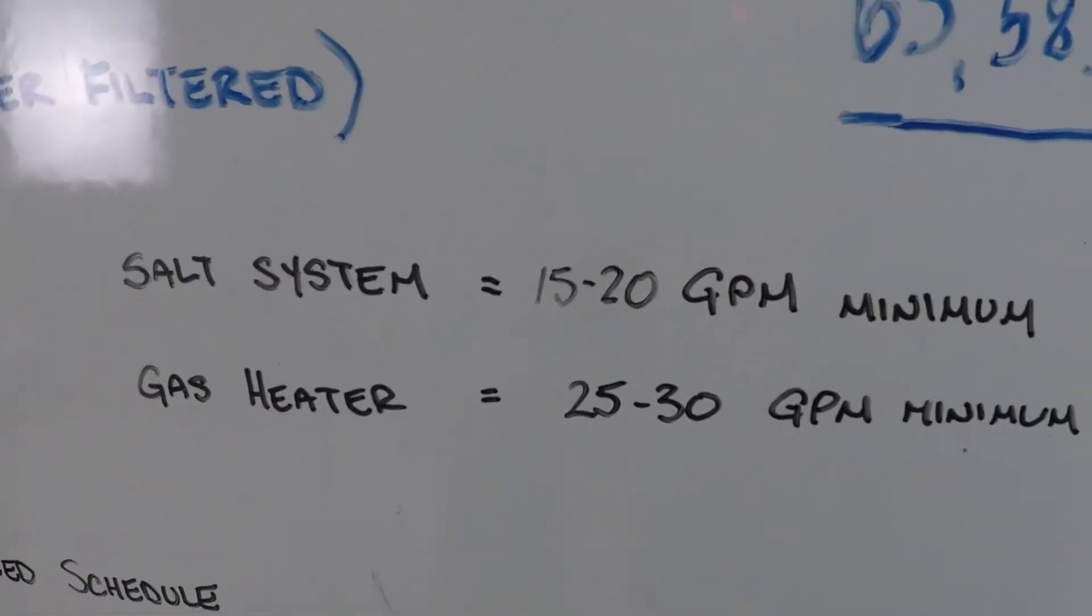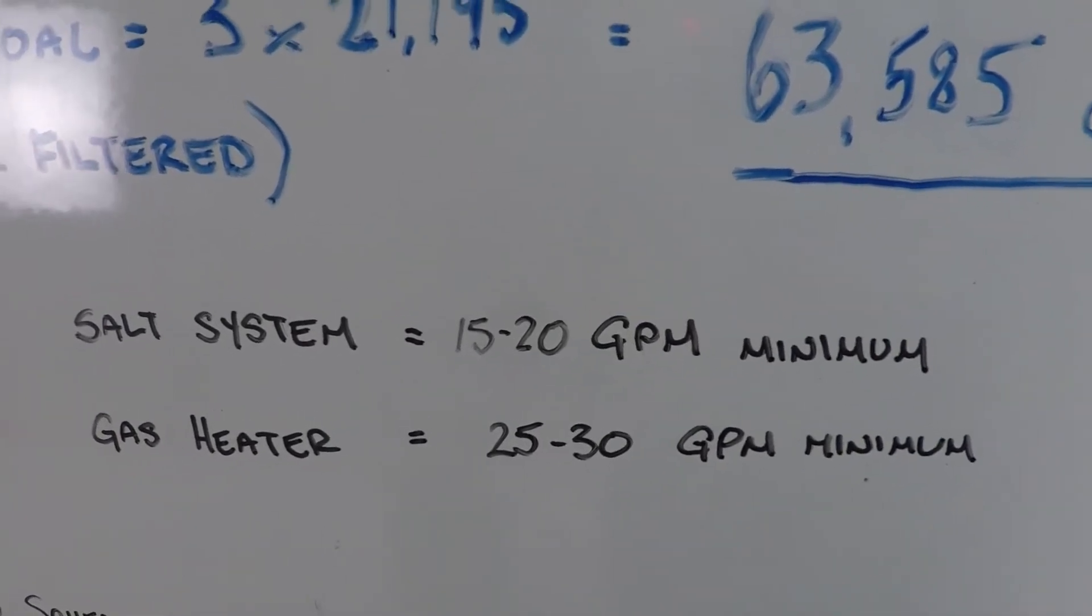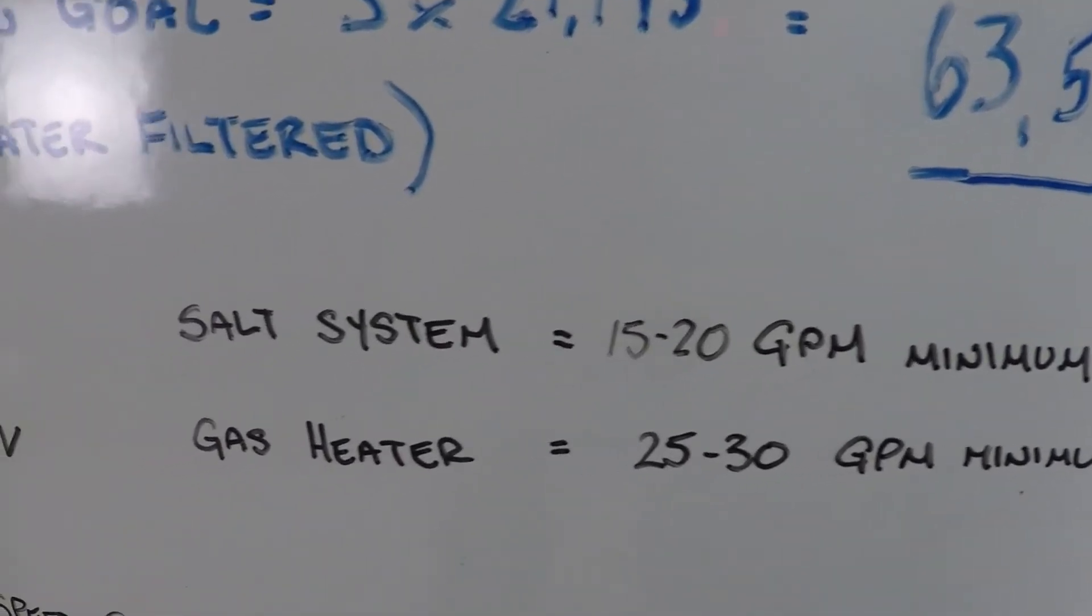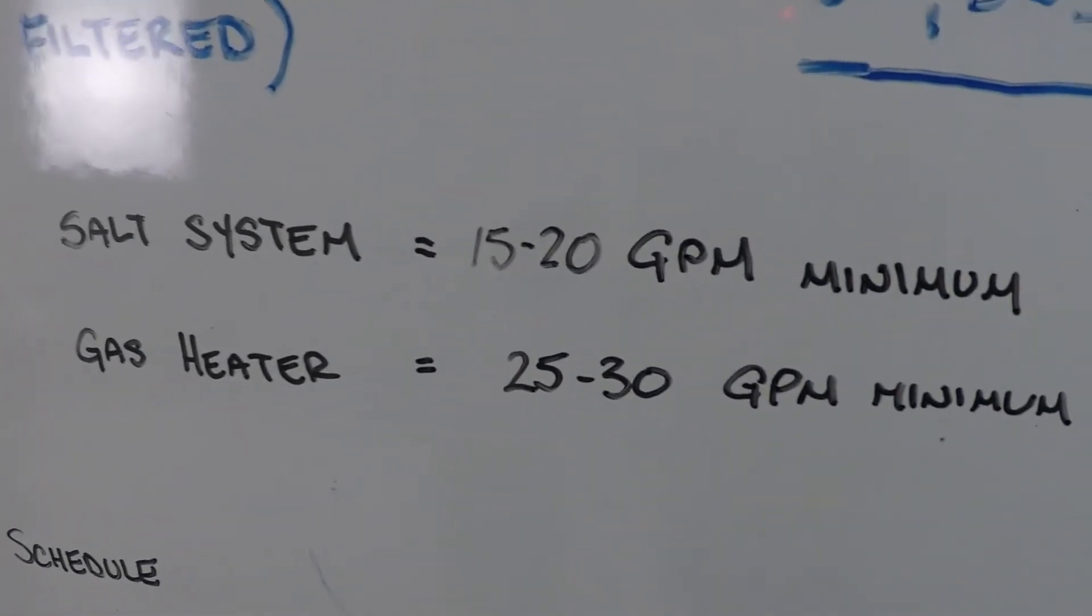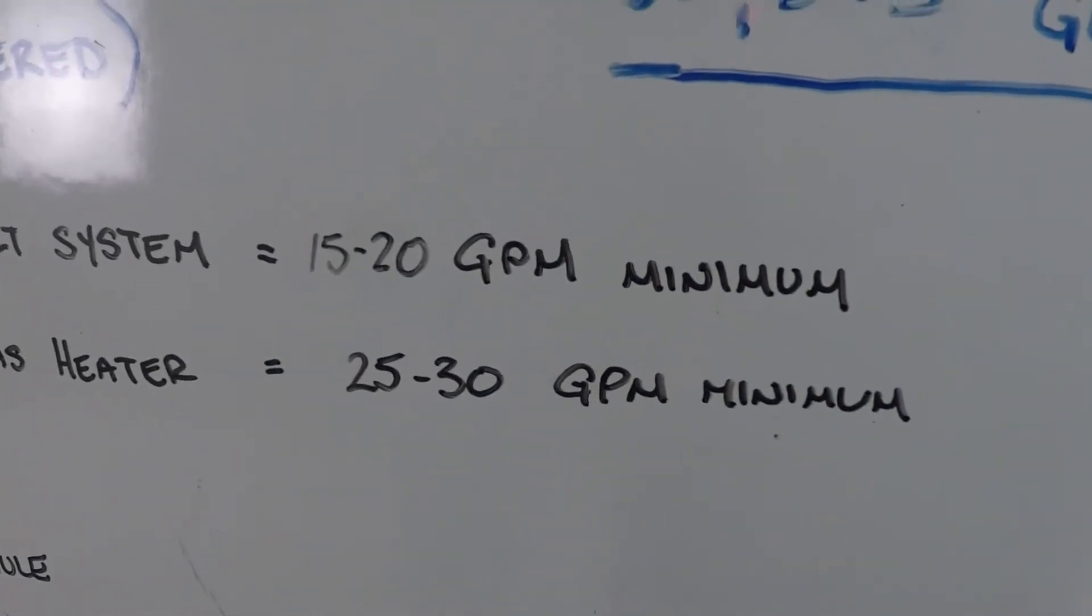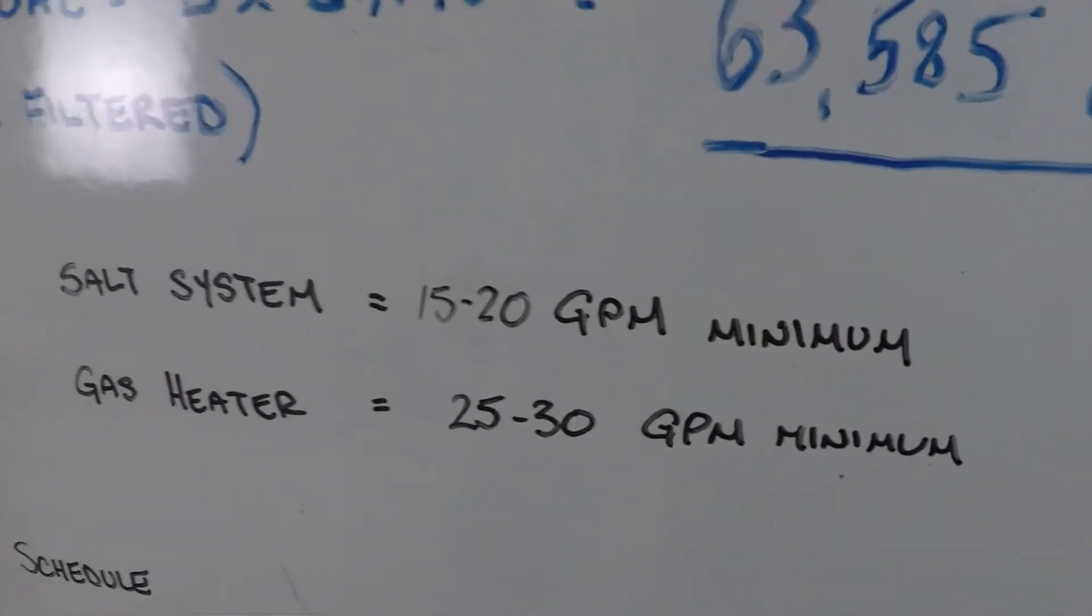Here's some of the considerations that you might be needing to know about. What if I have a salt system? Well you need typically 15 to 20 gallons per minute minimum for a salt system to turn on. Similarly for a gas heater you need 25 to 30 gallons per minute minimum, maybe even a bit more than that for a big heater.